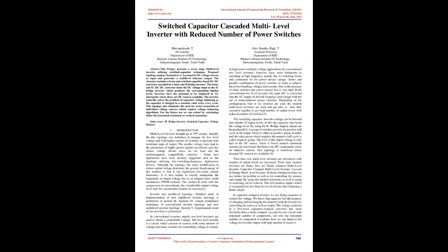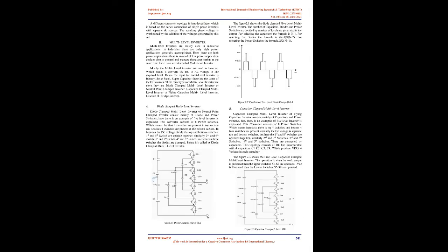In conventional two-level inverters, the input DC is converted into AC supply of desired frequency and voltage with the aid of semiconductor power switches. Depending on the configuration, four or six switches are used. Modern multilevel inverters are used, and the idea of cascading them together achieves a high number of output levels with a reduced number of switches. The switched capacitor boosts the voltage into a number of output levels, where the capacitor only boosts the voltage level. By using the H-bridge, a stepped output can be produced.